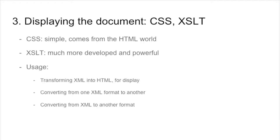The next technology in the constellation is the one helping you to display the documents. Here come into play XSLT and CSS. Simple CSS comes from the web and can work either on HTML web pages or also on XML. XSLT has more power, more features. These technologies are used not only for displaying documents — XSLT is also used to transform the document from your XML source into something else. Most commonly, this other thing will be a web page, so you transform XML into HTML and display it.